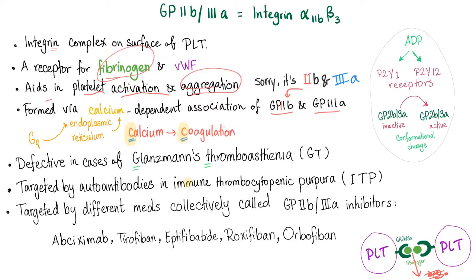This receptor is targeted by auto-antibodies — antibodies against the cell — because the body attacks itself, in cases of immune thrombocytopenic purpura, or ITP. The same receptor is targeted by different medications collectively called GP2B3A inhibitors, which is the topic of today's video: Abciximab, Tirofiban, Eptifibatide, Roxifiban, and Orbofiban.